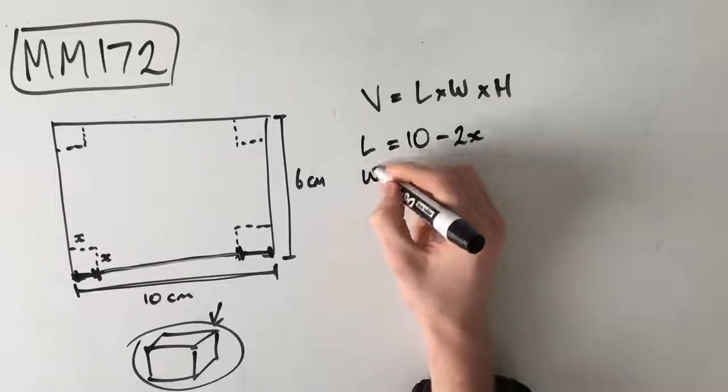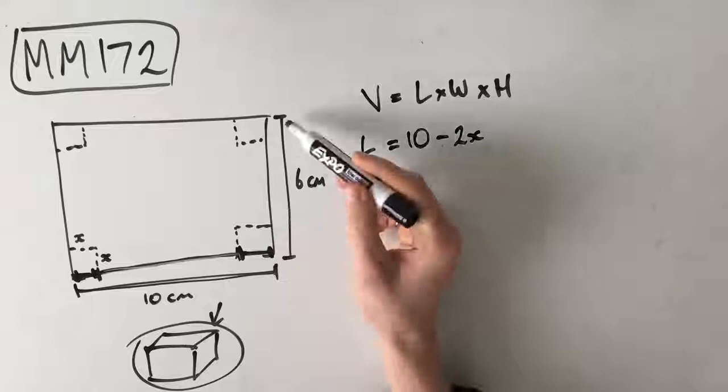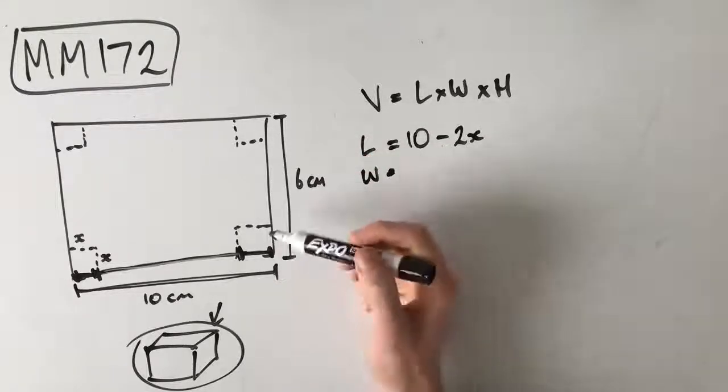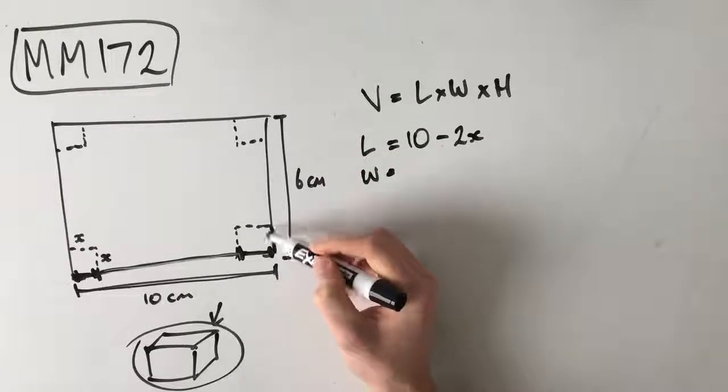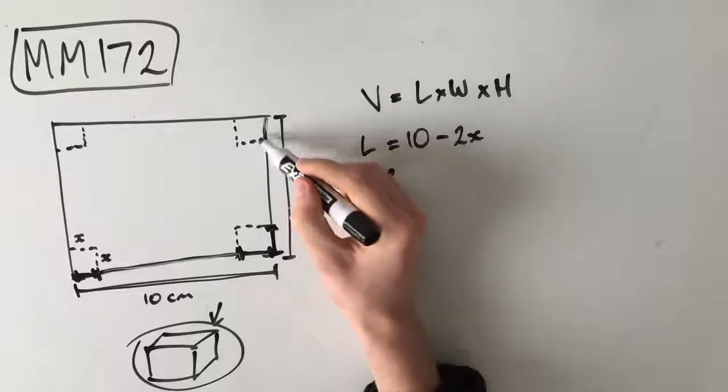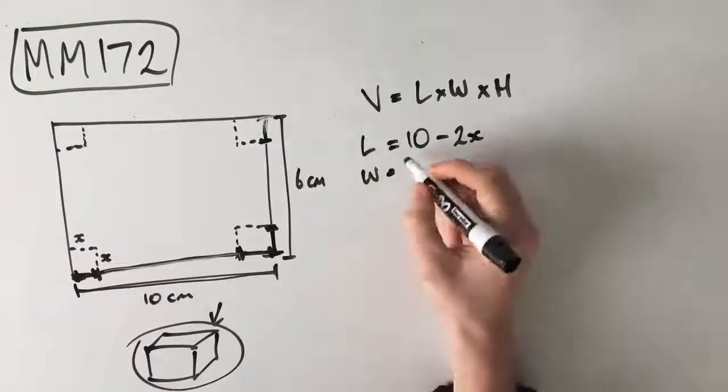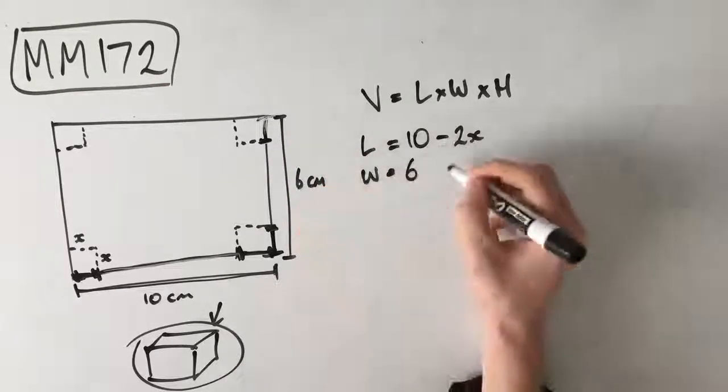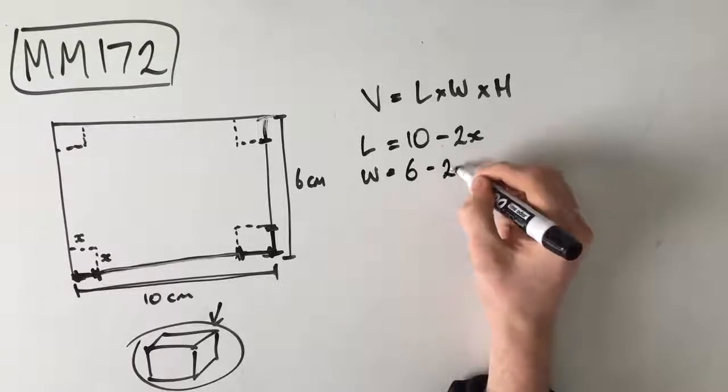Our width, same sort of thing. We know that our width is 6cm of this, but we've cut out a square of side length xcm, right? Twice. Which means that we have a width of 6 minus 2x.